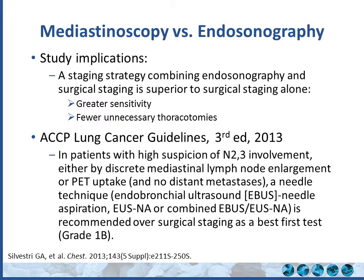The ACC lung cancer guidelines, third edition, state that in patients with high suspicion of N2 and N3 involvement on PET scan, a needle-based technique — EBUS, EUS, or combined — is recommended over surgical staging as the best first test. Today the paradigm has shifted: if you have enlarged, active mediastinal lymph nodes, the first step should be EBUS-guided or ultrasound-guided biopsy over mediastinoscopy, depending on your hospital setting and available expertise.